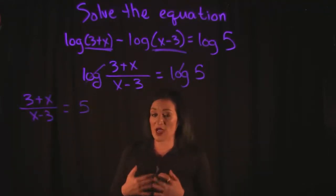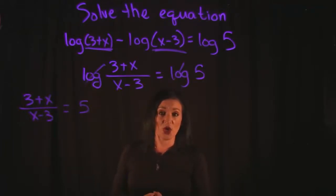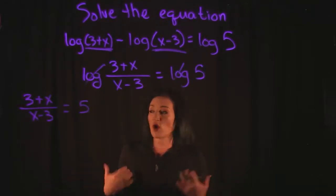I can just state that this is 3 plus X over X minus 3 is equal to 5, and this drops this down to a basic equation that we can solve here. So this brings it down to solving equation rules, making sure what we do to one side of the equation we do to the other side. The whole point from here on out is to solve for X and get X completely by itself.